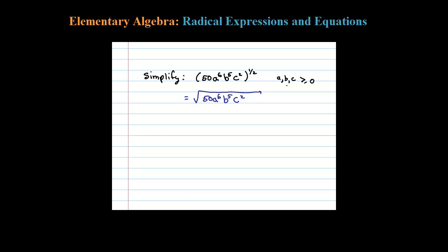Now I have to worry about the principal root problem, but it does say all the variables are positive, so I'm not going to worry about absolute values here. Now 50, I'm going to rewrite that as 25 times 2.